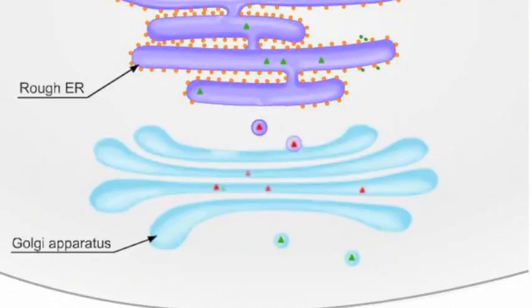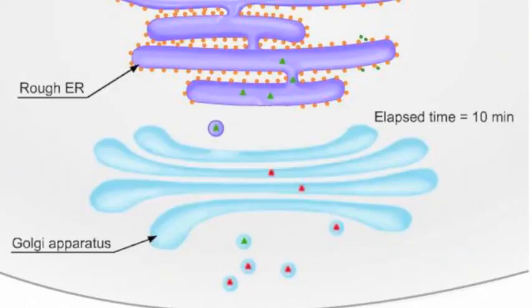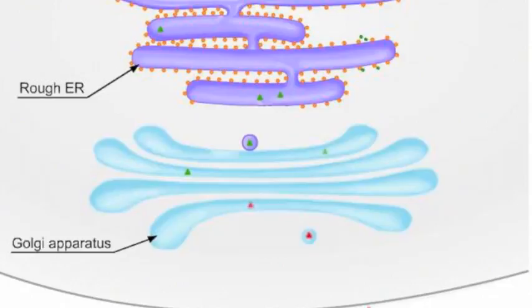The radiolabeled proteins, which began in the rough ER, have traveled to the Golgi apparatus within 10 minutes. The proteins then move through the cisternae of the Golgi apparatus. After a few hours, they're shuttled in secretory vesicles to the plasma membrane, where they're released outside the cell.